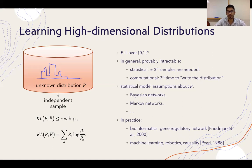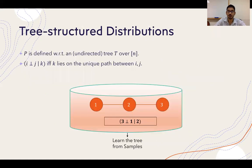In order to evade these hardness results, statistical model assumptions are made about the unknown distribution p. Two such popular assumptions include that p is a Bayesian network or p is a Markov network. These networks are used to model gene regulatory networks in bioinformatics and also in machine learning, robotics, and causality.